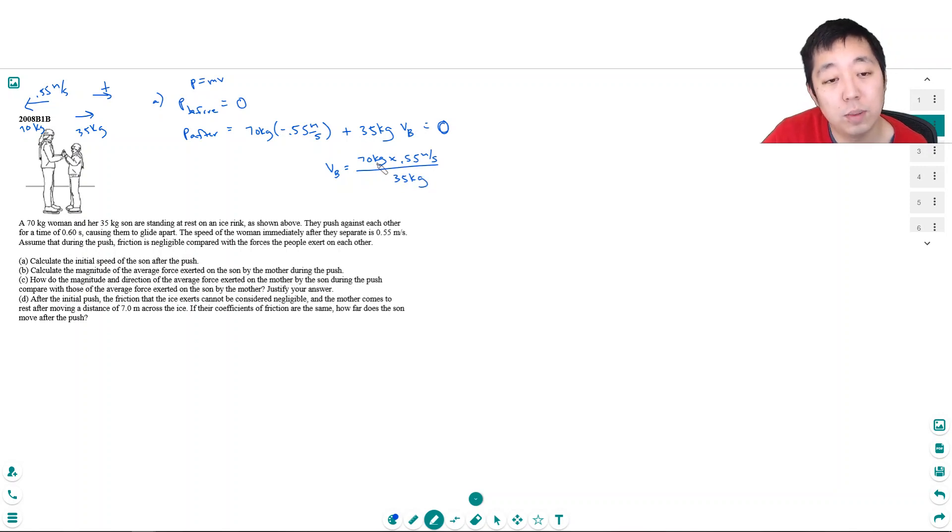The mom is twice, has twice the mass, so it's two times 0.55, which is 1.1 meters per second, just double the speed. So that's part A.